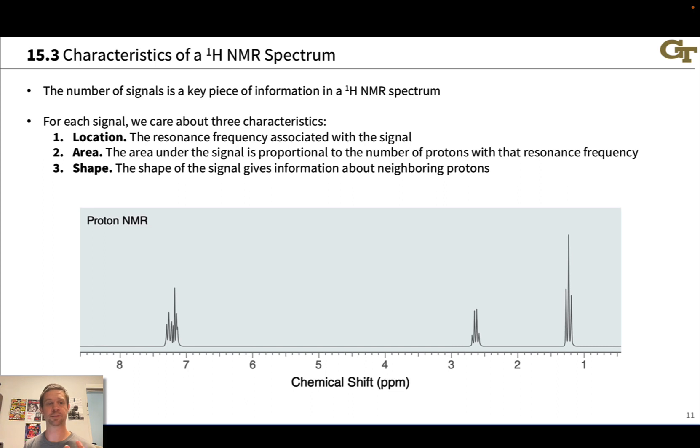So for each signal in an NMR spectrum, we care about three things. First, the location. Where along the x-axis does that signal appear? This is the resonance frequency or the precession frequency for those protons. Second, the area. The area under the signal tells us the number of protons with that resonance frequency. So this might give us insight into whether we're looking at a CH group, a CH₂, or a CH₃ group. This can also give us insight into any symmetry in the molecular structure.